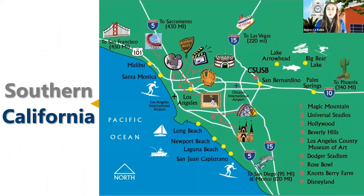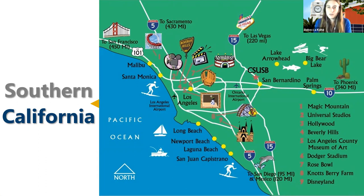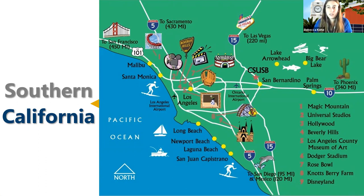Zooming into southern California, CSUSB is marked with a red star — just north of the city of San Bernardino, which has about 200,000 residents. Within the greater region covering Rancho Cucamonga and Riverside, about one million people live within a 15-minute drive of campus. We are a very urban area within the greater Los Angeles region.